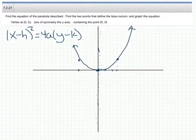h and k is our vertex, so when we plug in h is 0 and k is 0, that gives us x squared equals 4a times y.